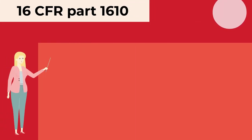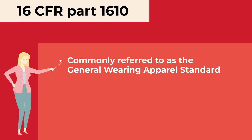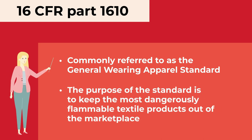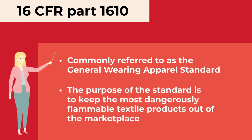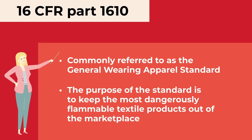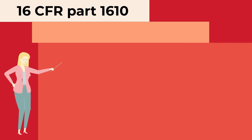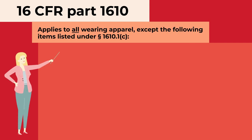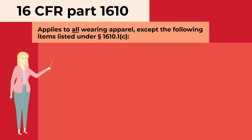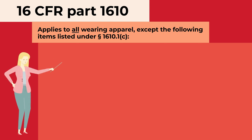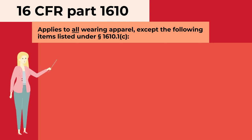16 CFR Part 1610 is commonly referred to as the General Wearing Apparel Standard. The purpose of the standard is to keep the most dangerously flammable textile products out of the marketplace. This standard applies to all wearing apparel, except the following items listed under section 1610.1(c)(1).